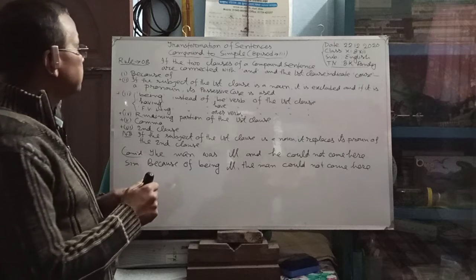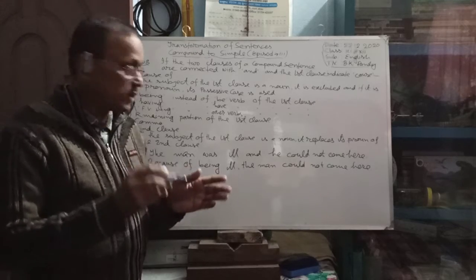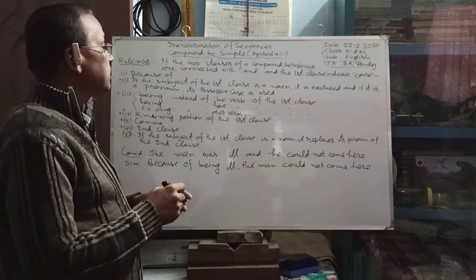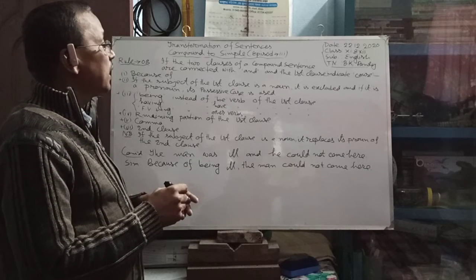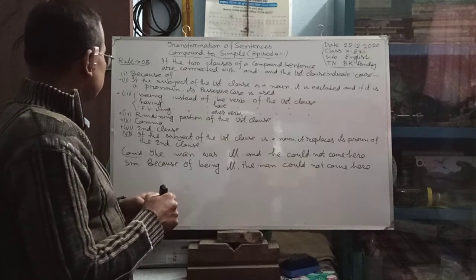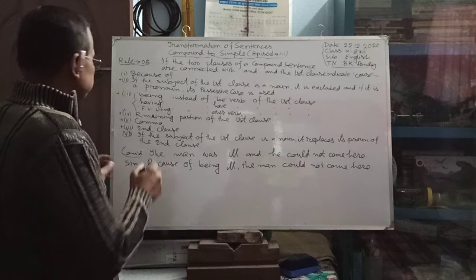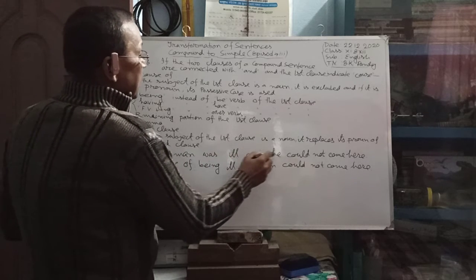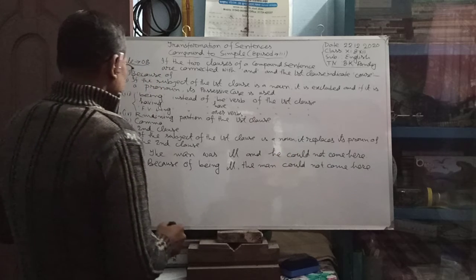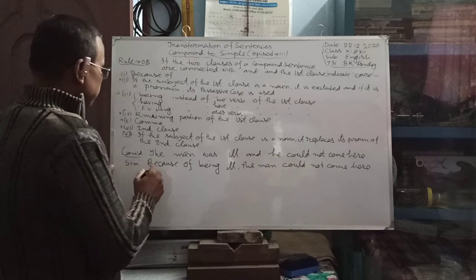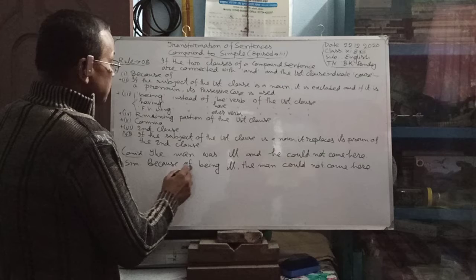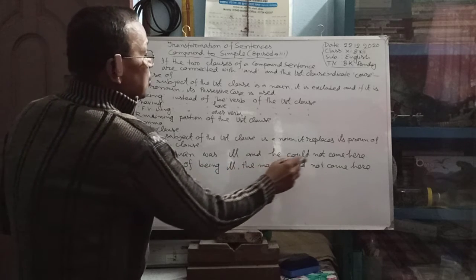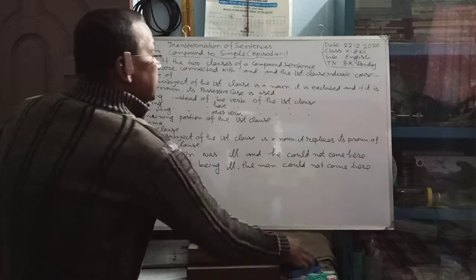It is noted that if the subject of the first clause is a noun, it will replace the subject of the second clause. For example: 'The man was ill and he could not come here.' Simple form: 'Because of being ill, the man could not come here.'